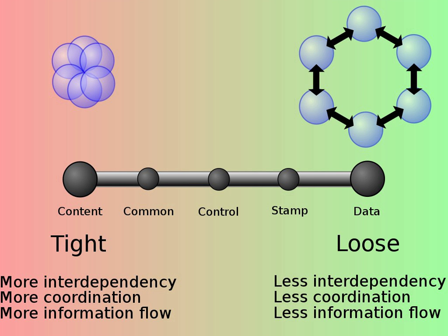In software engineering, coupling is the degree of interdependence between software modules, a measure of how closely connected two routines or modules are, the strength of the relationships between modules. Coupling is usually contrasted with cohesion.